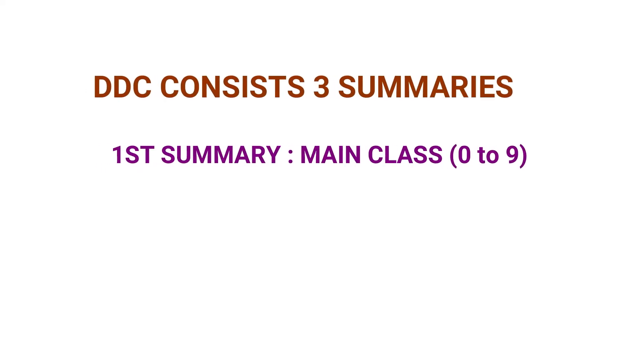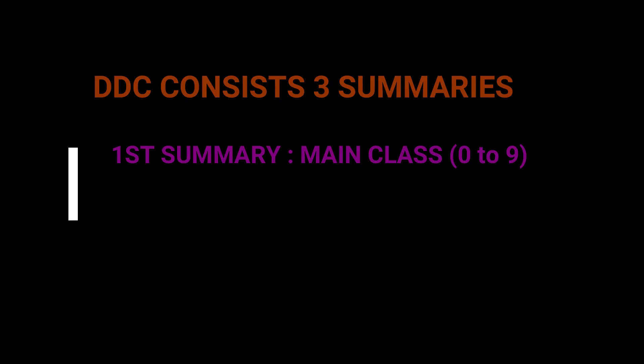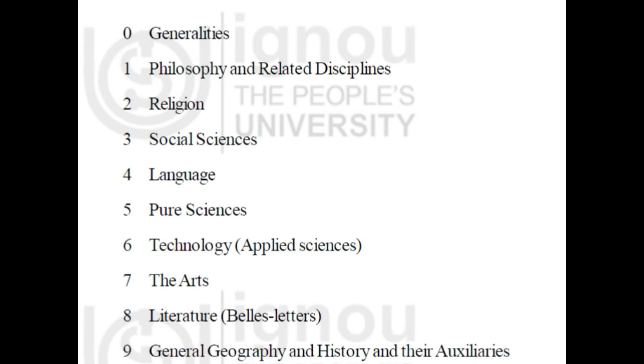As you know, DDC classification is useful to classify books or any other documents in a library — it is classification according to knowledge. DDC contains three summaries. The first summary consists of 10 main classes, denoted by the numbers 0 to 9.